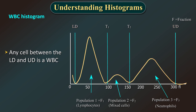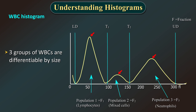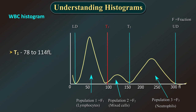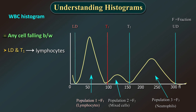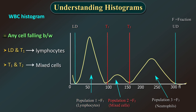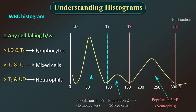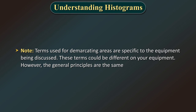Any cell between the lower and upper discriminator is a WBC. The three groups of WBCs are differentiable by size; each group forms a peak separated by a depression or valley or trough. Two valley discriminators, T1 (78–114 FL) and T2 (less than 150 FL), detect these troughs between the different cell sizes. Any cell between LD and T1 is a lymphocyte (small-sized, fraction F1 or population 1). Between T1 and T2 are mixed cells (mid-sized, F2 or population 2). Between T2 and UD are neutrophils (large-sized, F3 or population 3).